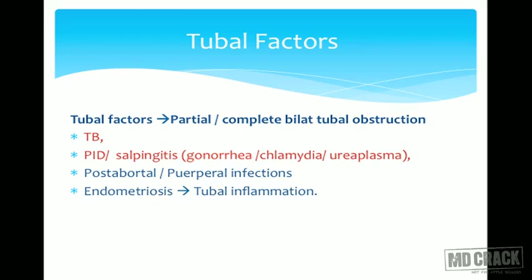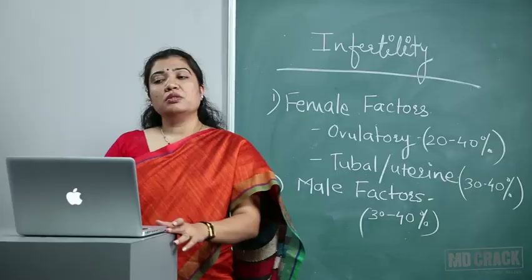Endometriosis causes tubal inflammation, kinking, and affects the intratubal environment, impairing tubal function. The key tubal causes to remember are tuberculosis and sexually transmitted diseases — gonorrhea, chlamydia, and Ureaplasma.